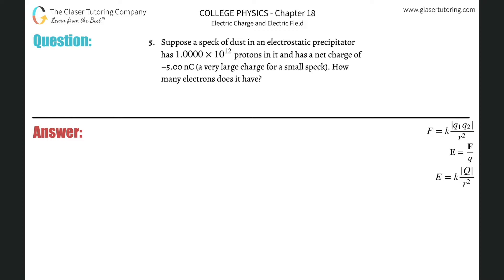Number five, suppose a speck of dust in an electrostatic precipitator has 1 times 10 to the 12 protons in it and has a net charge of negative 5 nanocoulombs. How many electrons does it have?